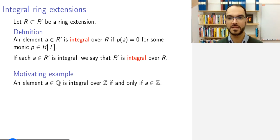So the motivating example, at least for the name, is the case when we take R equals the ring of the integers and R', its field of fractions, the ring of rational numbers. So the statement here says that an element, a rational number, is integral over Z if and only if it is an integer, hence the name integral.